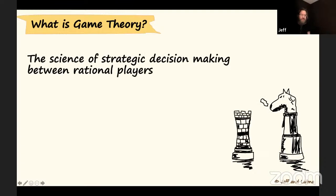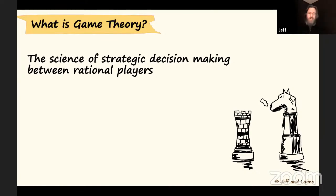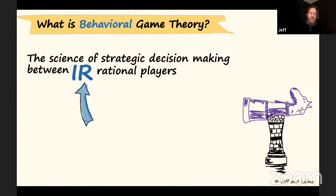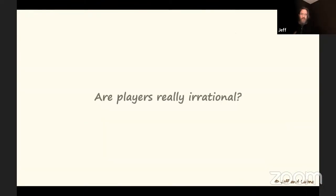To get everyone level-set: game theory was derived in the 1940s by economists as a way to determine outputs and outcomes. It's a design of strategic decision-making between rational players. My research partner Lubna and I focus on behavioral game theory, where social psychologists call this strategic decision-making between irrational players. Players are yourself and anyone you interact with, in social and psychological situations.